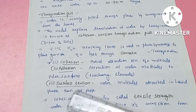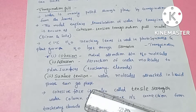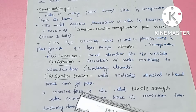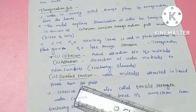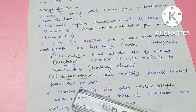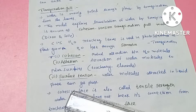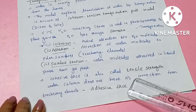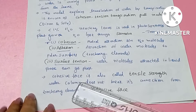Next is surface tension. Water molecules in the liquid form are attracted, and surface tension arises at the liquid-gas interface. The cohesive force of water is called tensile strength.